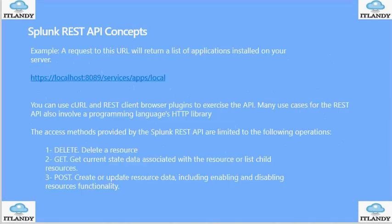Here is a very basic example of a request to a URL which will return a list of the applications installed on your server: HTTPS localhost on a certain port, services/apps/local. You can use the URL and a REST client browser plugin to exercise the API.